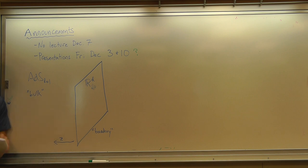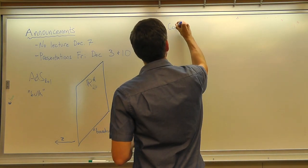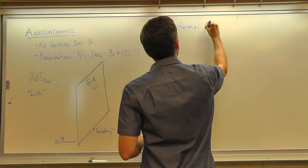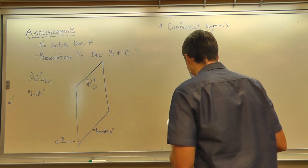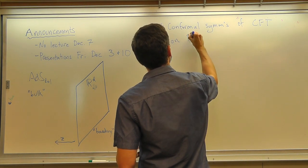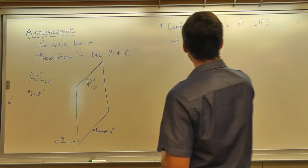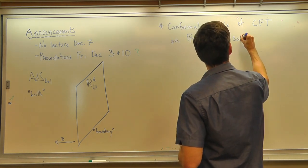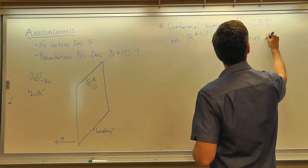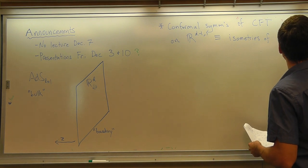I have just a couple more comments about the basics of ADS-CFT, and then we're going to start talking more systematically about conformal field theory. The next comment was that the conformal symmetries of the CFT on Minkowski space, R^{d-1,1}, are the isometries of ADS-CFT.